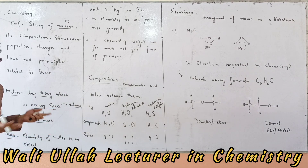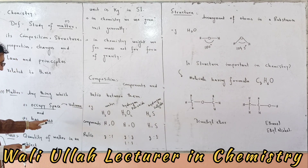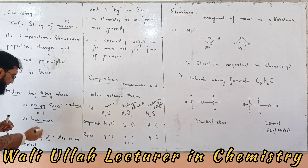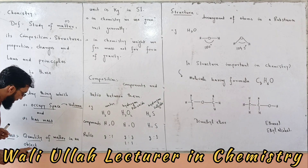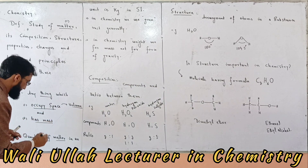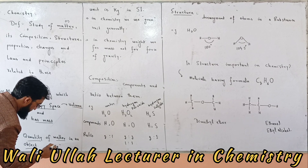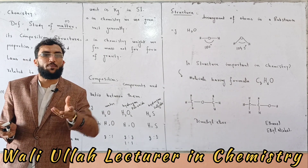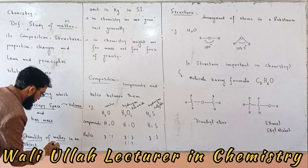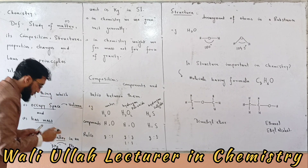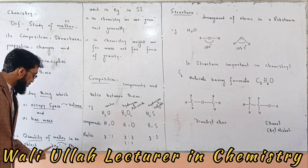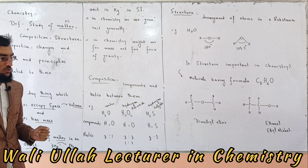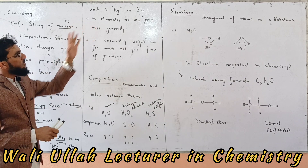When we define mass, it is an intrinsic property of matter — the quantity of matter in an object. For example, a 2 kg object has the same mass regardless of location. The SI unit of mass is the kilogram.